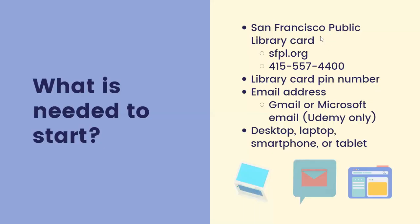To get started, you'll need a San Francisco Public Library card. If you don't have one, you can go to sfpl.org for more information on how to sign up, or call us at 415-557-4400. Once you have your library card, you'll also need a library card PIN number. If you have a card but don't remember your PIN, you can call and someone will help you.